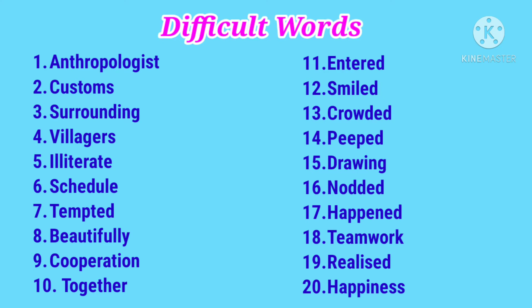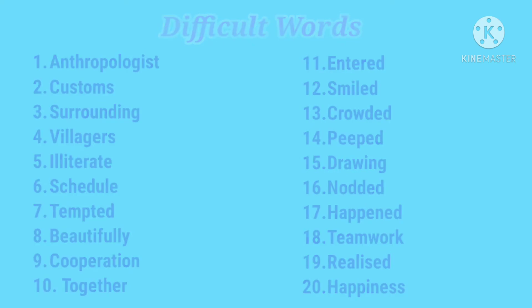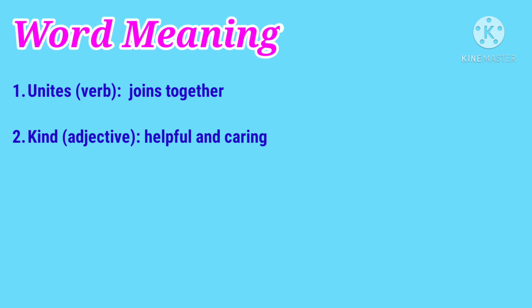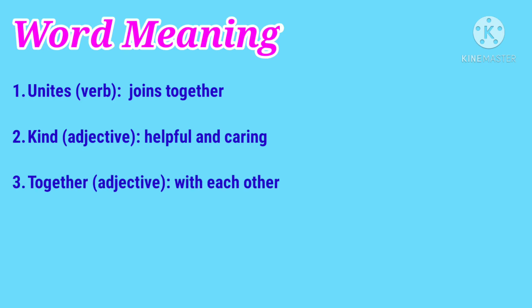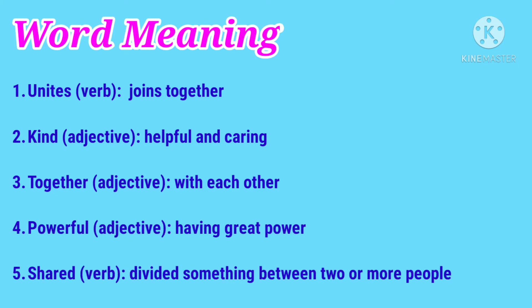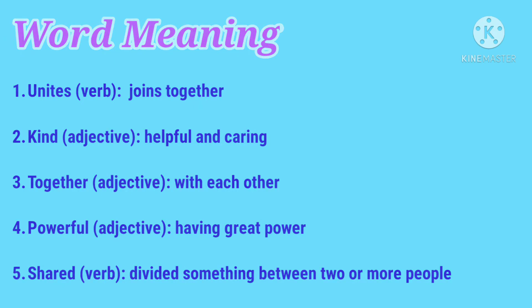Now we'll do word meanings — five words from the chapter. First: unites (verb) — joins together. Second: kind (adjective) — helpful and caring. Third: together (adjective) — with each other. Fourth: powerful (adjective) — having great power. Fifth: shared (verb) — divided something between two or more people.